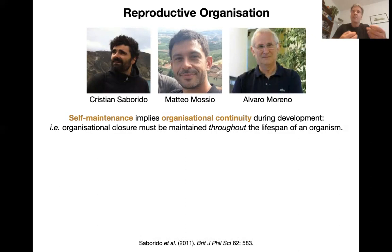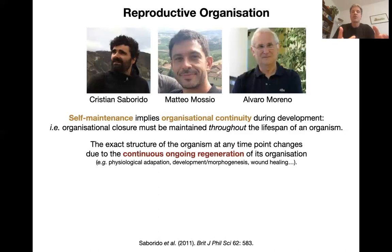What is important to point out is that self-maintenance implies an organizational continuity during development — and remember, development is the whole of the life cycle. Organizational closure must be maintained throughout the lifespan of an organism, through time. But the structure, the organization itself, doesn't remain the same. It changes at any point in time because of the continuous ongoing regeneration of its organization. This is the needful freedom and the thermodynamic predicament in Hans Jonas' terms — organisms have to be active in order not to die.